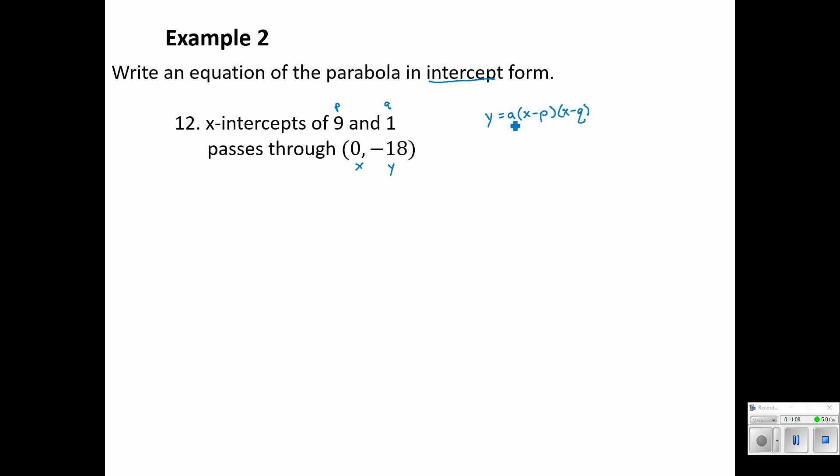So y equals our unknown a times (x minus p) times (x minus q). So negative 18 equals a times negative 9 times negative 1. And negative 9 times negative 1 is positive 9, so I'm going to divide positive 9 from both sides. And I find that a equals negative 2.